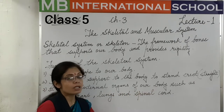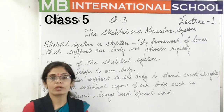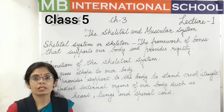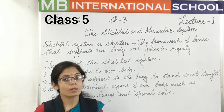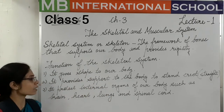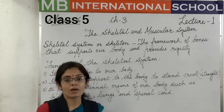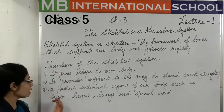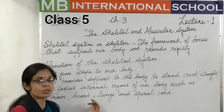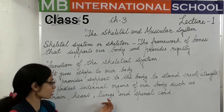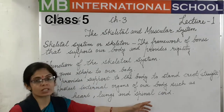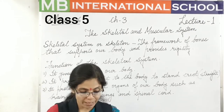The skeletal system also helps protect the internal organs of our body. There are many delicate internal organs, and if they come in contact with an object they can be injured. The skeletal system plays a very big role in protecting these organs: the skull protects the brain, the rib cage protects the heart and lungs, and the vertebrae protect the spinal cord.